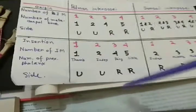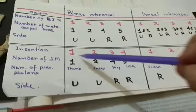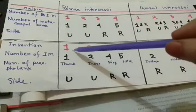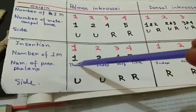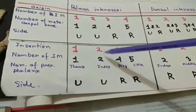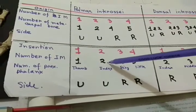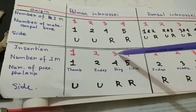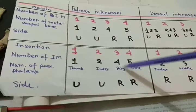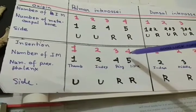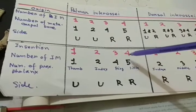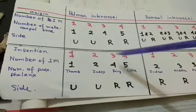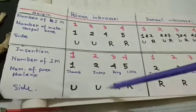Now the insertions. For palmar interossei — muscles one through four: the first is inserted into the proximal phalanx of the thumb, the second into the proximal phalanx of the index finger, the third into the proximal phalanx of the ring finger, and the fourth into the proximal phalanx of the little finger. The sides match the origin pattern: ulnar, ulnar, radial, radial.